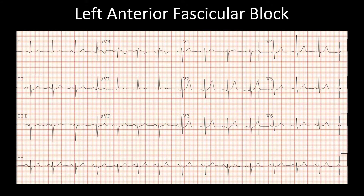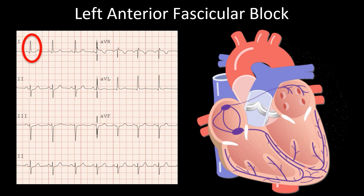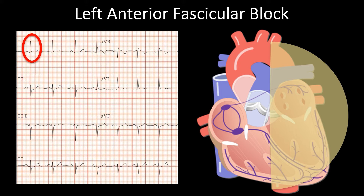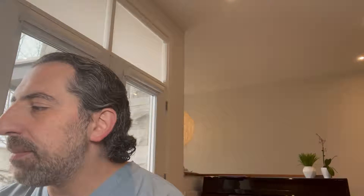This is an example of left anterior fascicle block. As you can see, lead 1 is positive and lead 2 is negative, indicating left axis deviation. When lead 1 is positive, the depolarization vector points to the left side of the heart, and when lead 2 is negative, the axis of depolarization points towards the top right. The overlap between both is minus 30 to minus 90 degrees, and hence the axis is shifted leftwards.